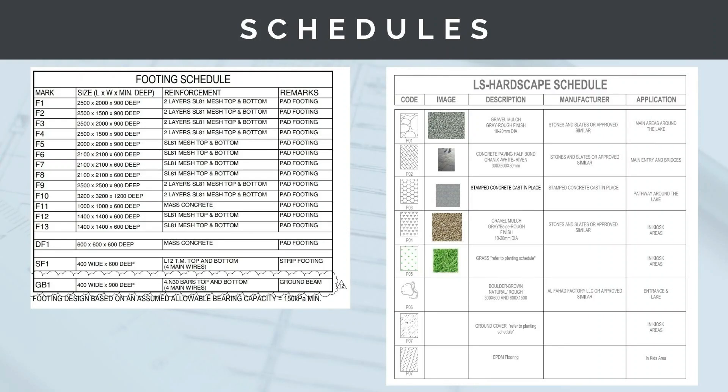Next, we've got schedules. Schedules are a good way of summarizing a lot of information into a small table. For example, a footing schedule has an annotation for each different type of footing. The plan view might label foundations F1, F2, F3, F4, and you can then look at the schedule to find that F1 is a 2,500 by 2,000 by 900mm deep footing with two layers of steel reinforcement, rather than producing a separate drawing for every footing type.